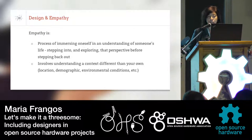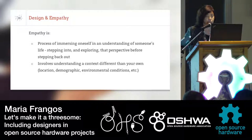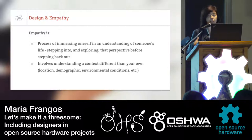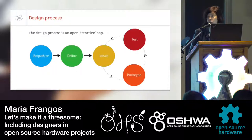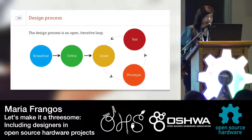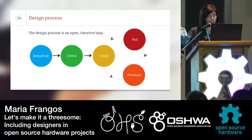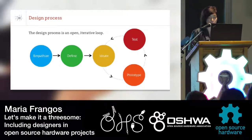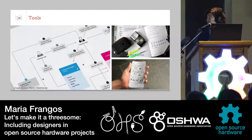Empathy is a process of immersing oneself in understanding someone else's life and reality — stepping into it, exploring that perspective before stepping back out. It also involves understanding a context different from your own: location, demographic, environmental conditions, etc. You're probably familiar with this type of diagram. On the right-hand side is the iterative loop of ideate, prototype, test, and repeat. But on the left, empathize is the first step designers start with, and we use empathy tools throughout the whole process. There are over a hundred design methodologies we can draw from.